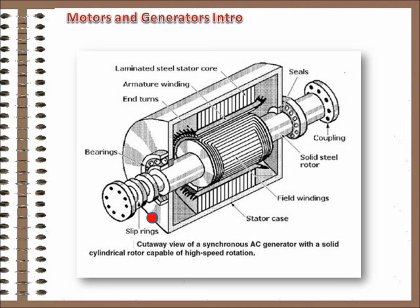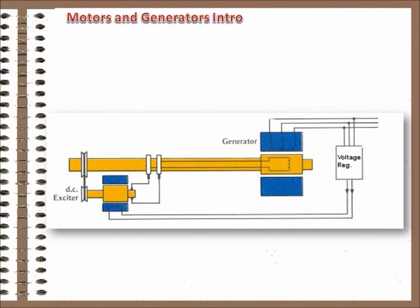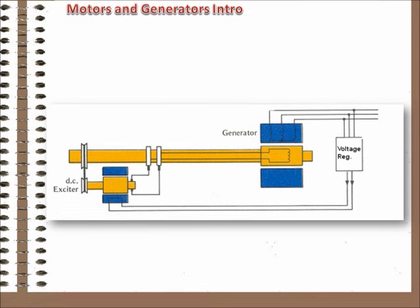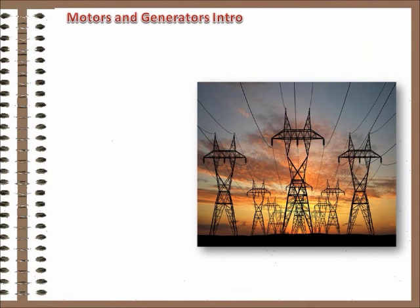Another feature of the AC generator comes from controlling the field. As we said, DC is supplied to the rotor to create the magnetic field that induces voltage in the stator. That DC supply is manipulated by the generator's excitation system to control voltage. Increase current flow to the rotor, and generator voltage increases. The stronger magnetic field induces higher voltage.